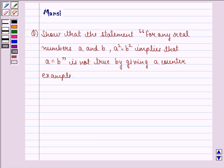Hello and welcome to the session. My name is Mansi and I am going to help you with the following question. The question says, show that the statement for any real numbers A and B, A square equals to B square implies that A is equal to B is not true by giving a counter example.